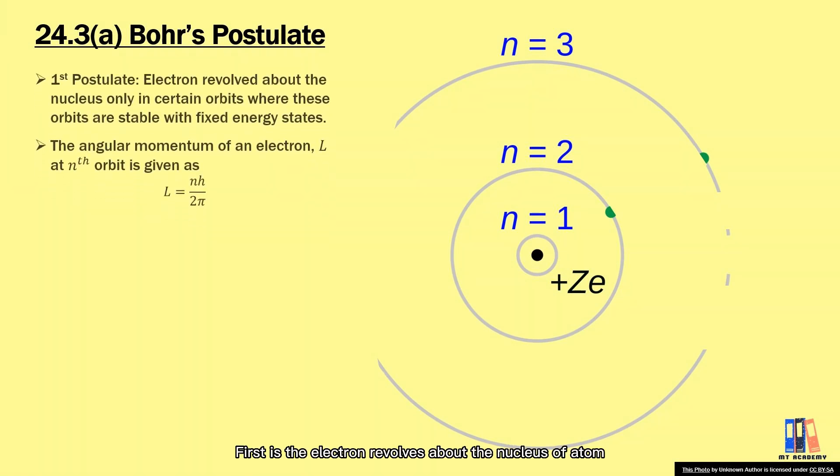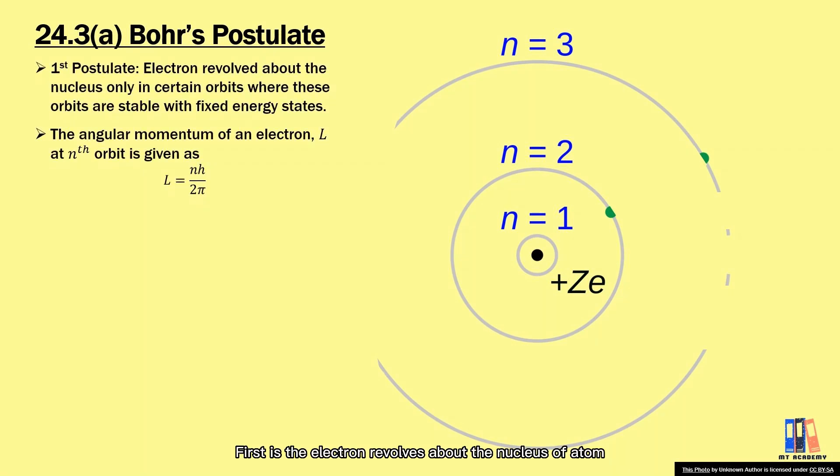There are two points here. First is the electron revolves about the nucleus of atom only in certain orbits. The angular momentum with the symbol L is given as nh over 2π, where n is the n-orbit of the atom, and this formula will be used again later on.